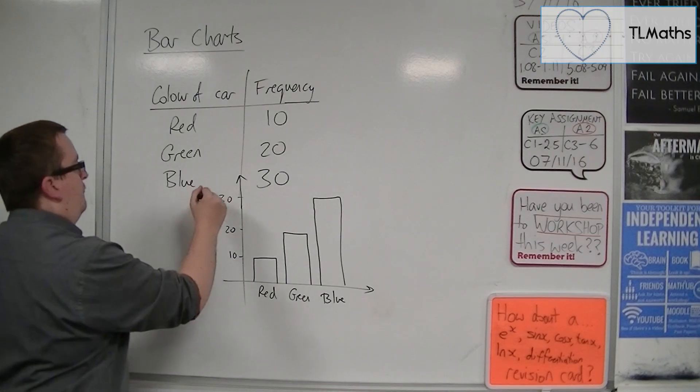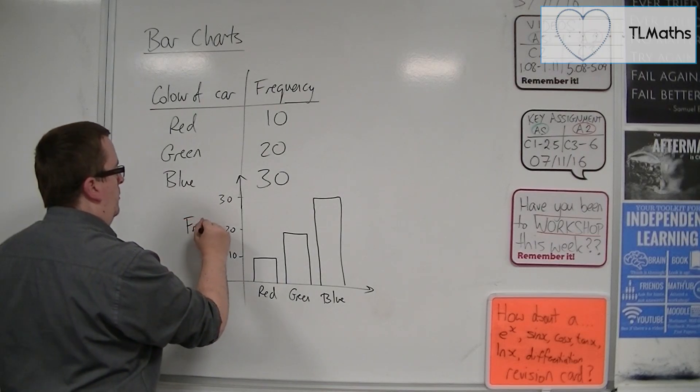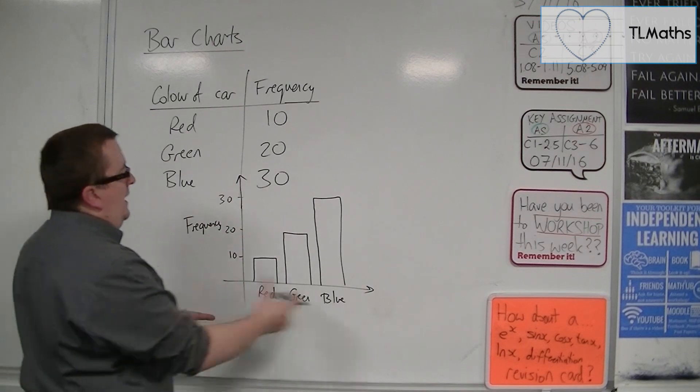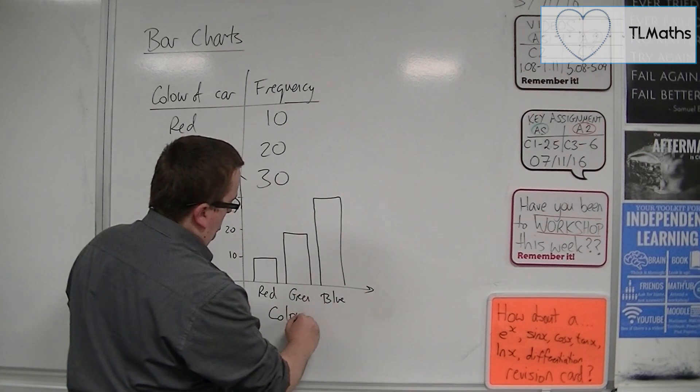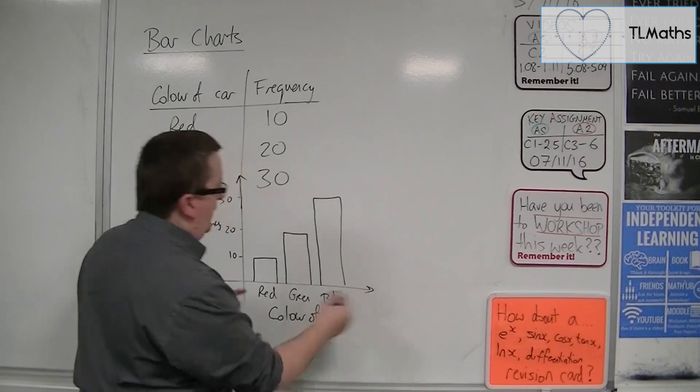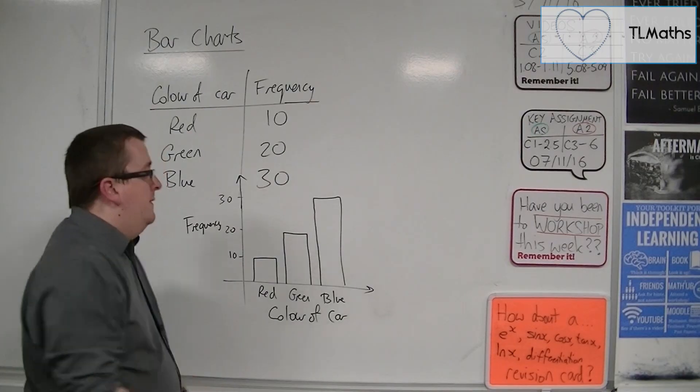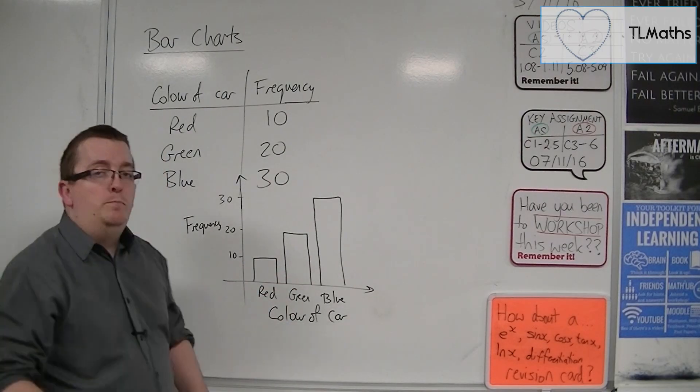OK, so we're going to have frequency as the y-axis and the colour of car as the x-axis. And as you can see, the bars are separated. There is a gap between each bar.